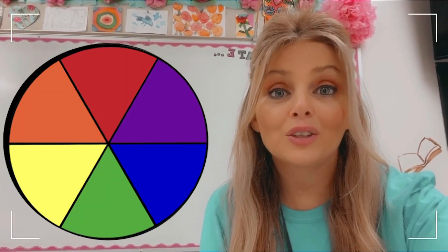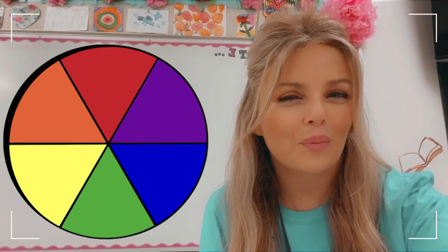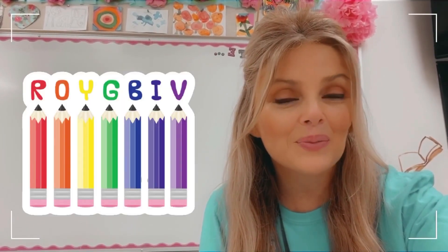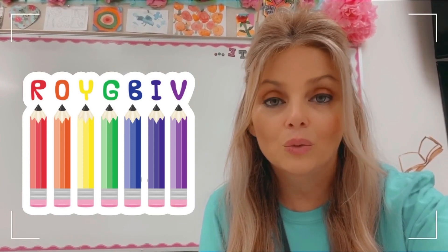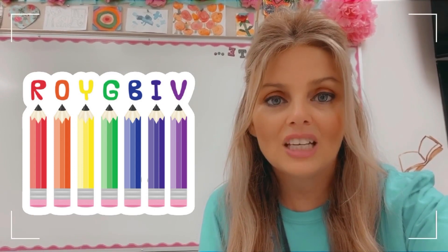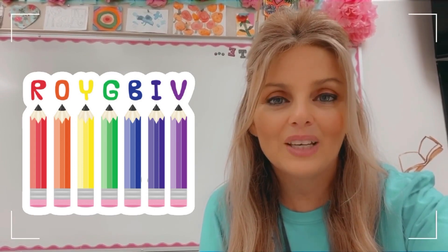So you made it through the primary and secondary colors. Does it remind you of a rainbow? We like to call that rainbow ROYGBIV. ROY is red, orange, and yellow. G is for green, and BIV is blue, indigo, and violet.